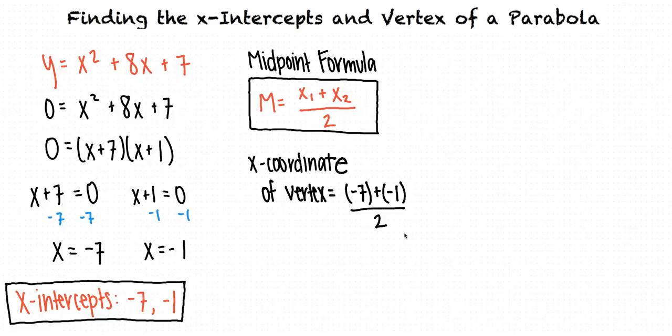When we simplify, we get negative 4 as the x-coordinate of our vertex. Now that we've found our x-coordinate, negative 4, we can substitute this into our original equation, y equals x squared plus 8x plus 7, to find the y-coordinate of the vertex.